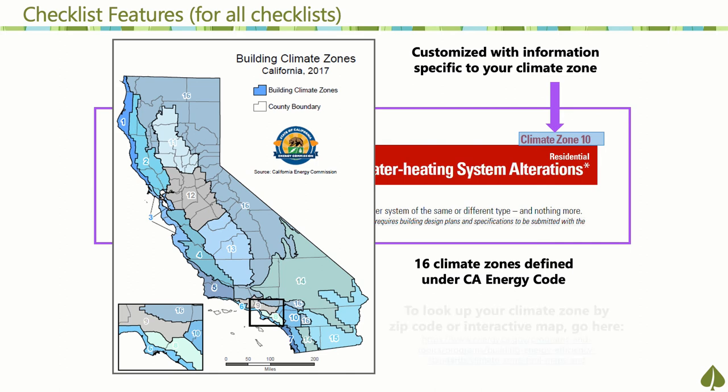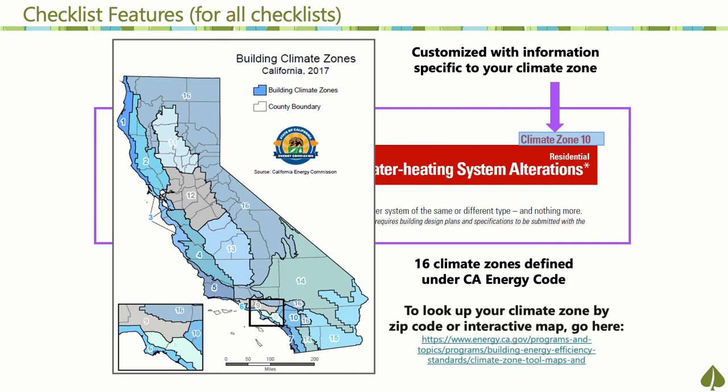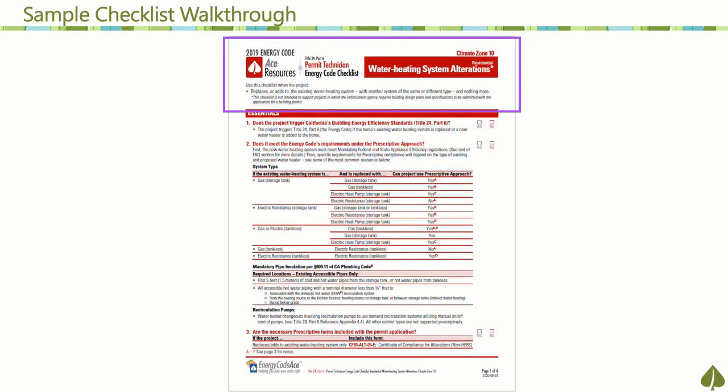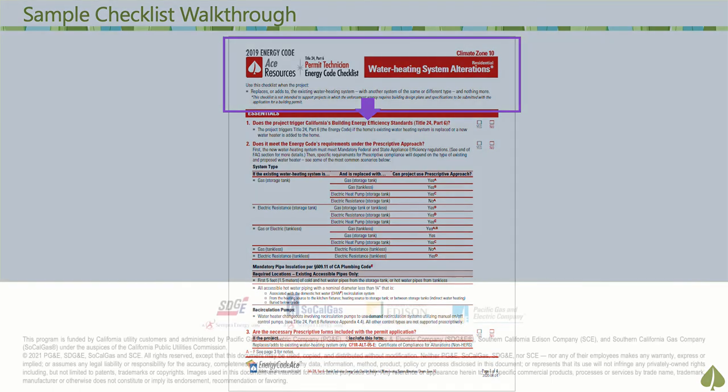Not sure where a submitted project permit's climate zone is? The California Energy Commission provides a way to find it by interactive map or zip code on their website. In the next video, you'll look at a sample checklist to see how it's organized, and then we'll walk through a permit intake scenario so you can see the checklist in action.